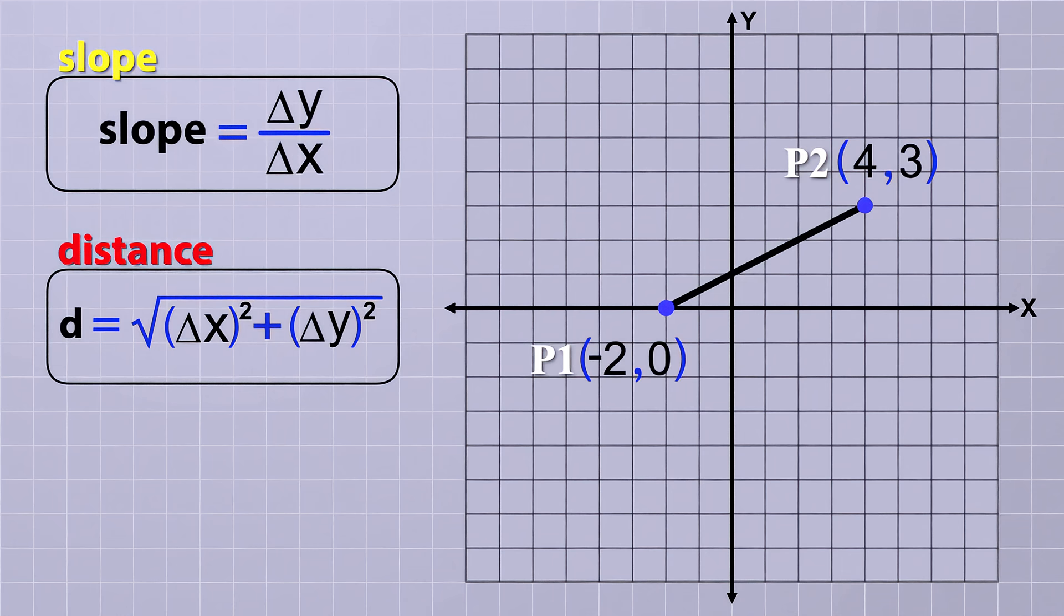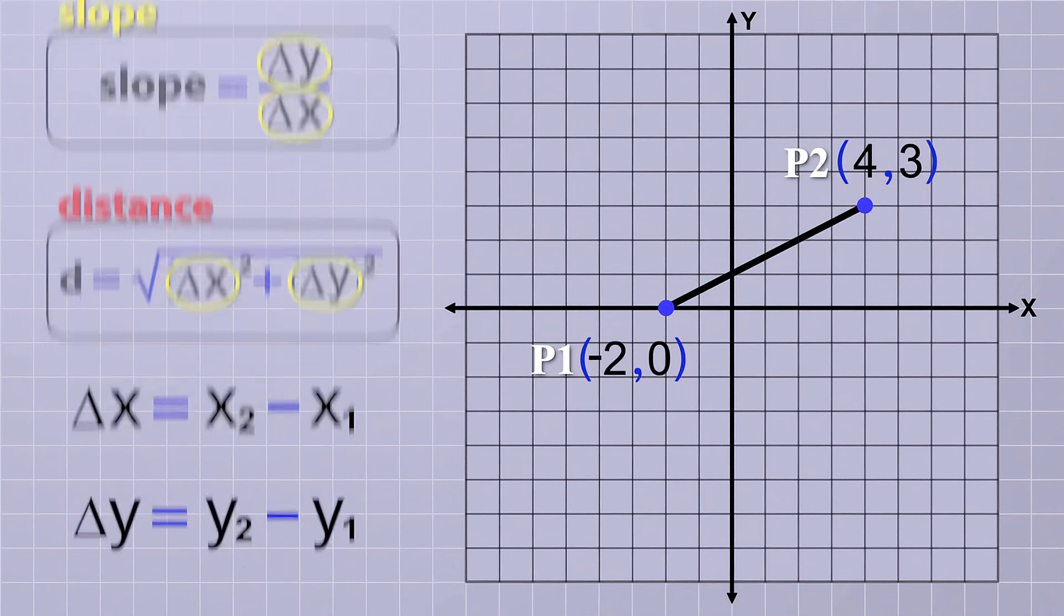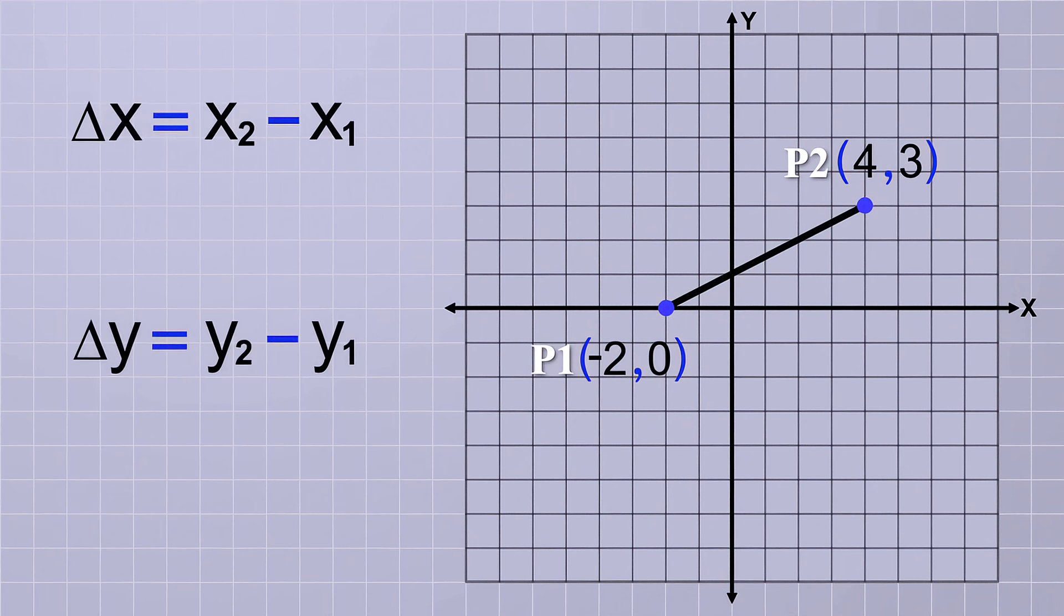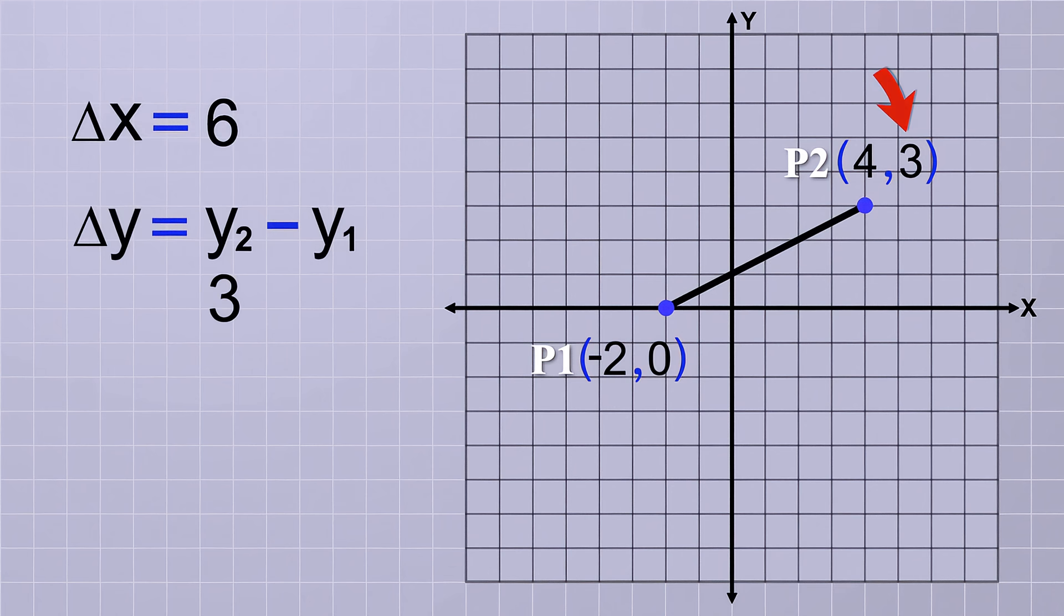The equations for slope and distance both use delta x and delta y, so let's calculate those values first. delta x equals x2 minus x1, and in this problem x2 equals 4 and x1 equals negative 2. So delta x equals 4 minus negative 2, which is just 6. Next we calculate delta y. Delta y equals y2 minus y1, and in this problem y2 equals 3 and y1 equals 0. That means delta y equals 3 minus 0, which is just 3.